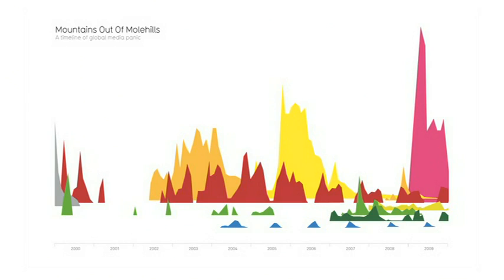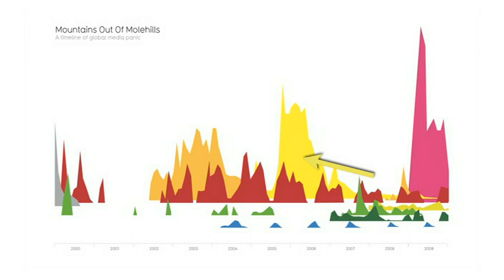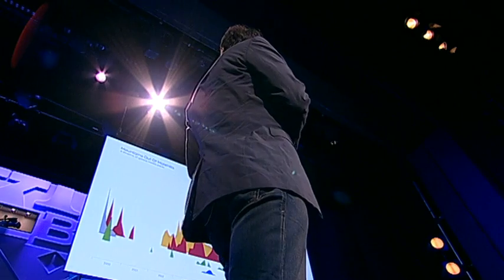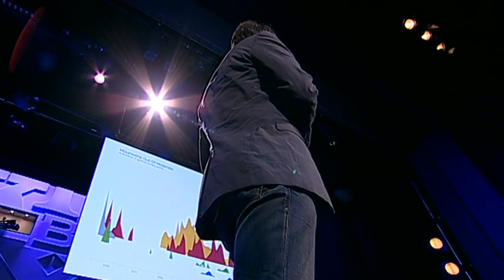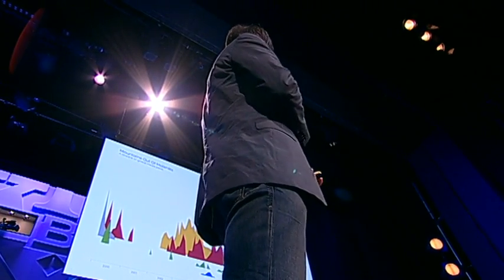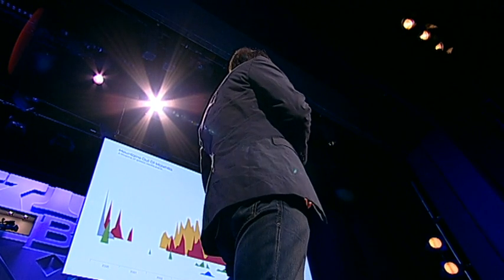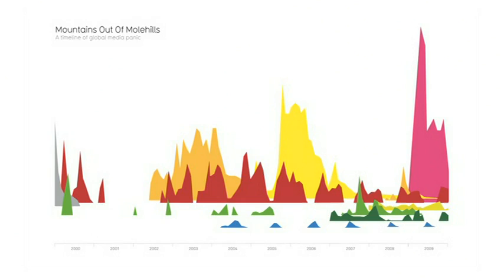So let me label this for you. Swine flu — pink. Bird flu. SARS — brownish here, remember that one? The millennium bug — terrible disaster. These little green peaks are asteroid collisions. And in summer here, killer wasps.